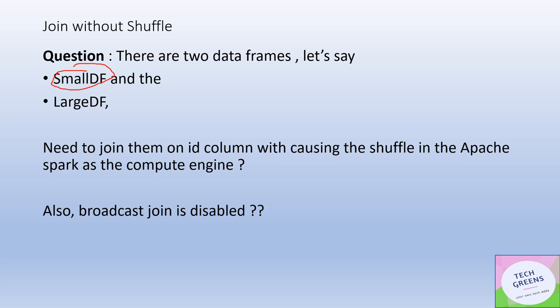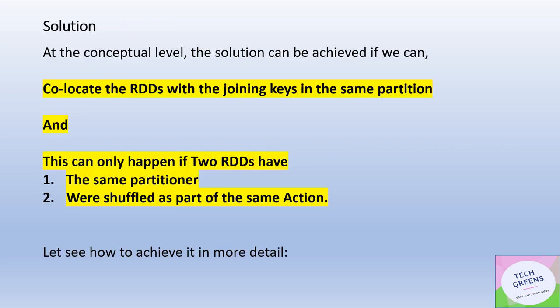The join then happens when the partitions co-locate, and thus there is no shuffling — only the broadcast is performed. But the trick of the question is: broadcast join is disabled. You cannot use broadcast join. Then what can we do to write a join without shuffle?